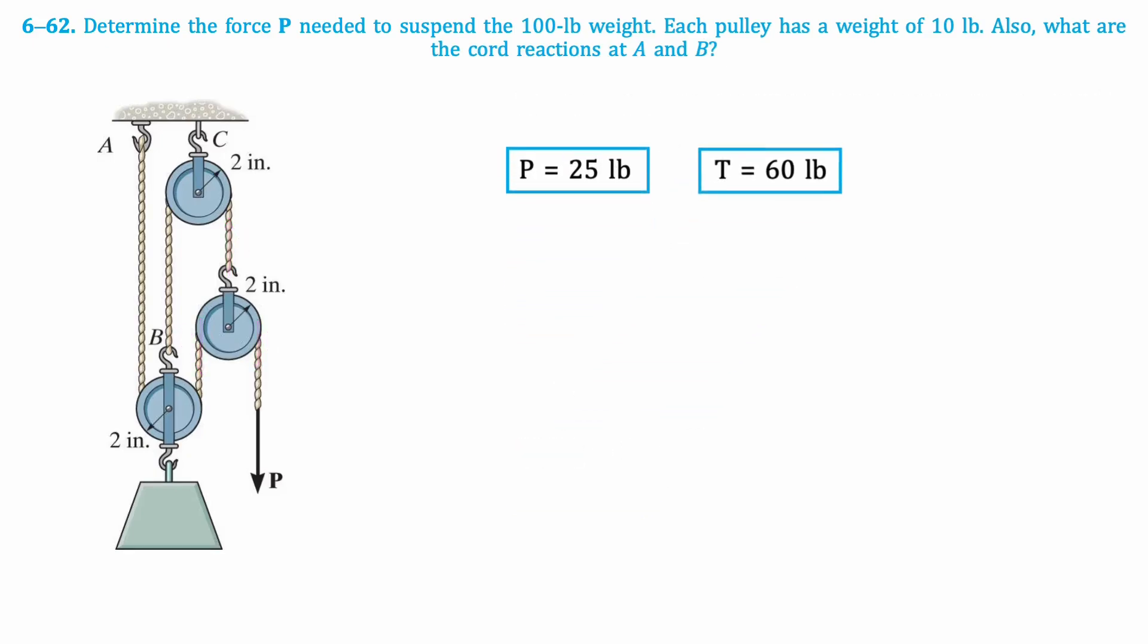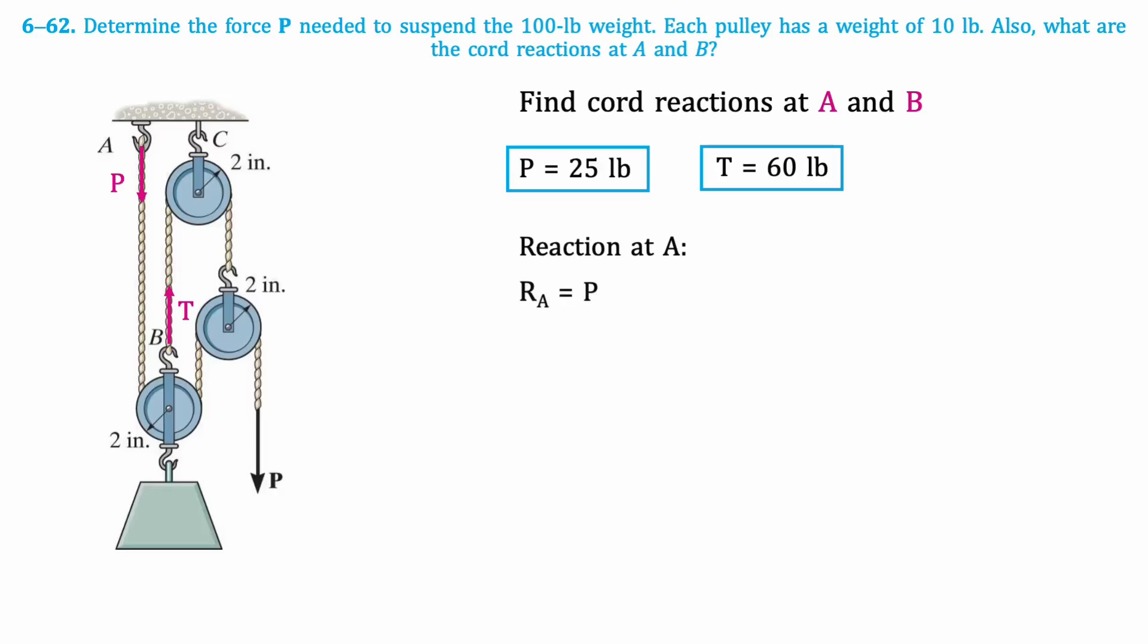Now let's find the chord reactions. At point A, only force P acts. So the chord reaction at A is equal to P, which is 25 pounds. At point B, only force T acts. So the chord reaction at B is T, which is 60 pounds.